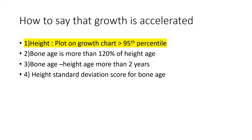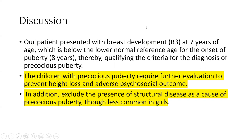To assess whether growth is accelerated: the patient's height was plotted above the 95th percentile on the growth chart. Other parameters include bone age more than 120% of height age, bone age minus height age more than 2 years, or height standard deviation score for bone age. Our patient presented with breast development at 7 years, below the reference age of 8, clearly satisfying the criteria for Precocious Puberty.